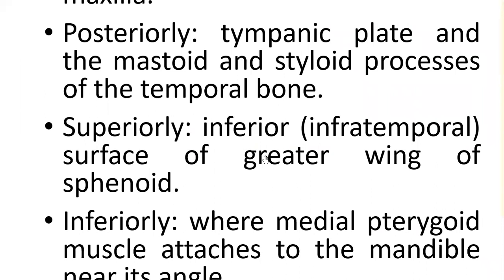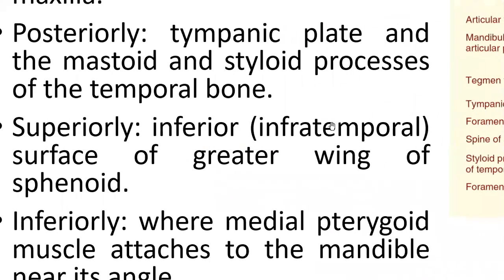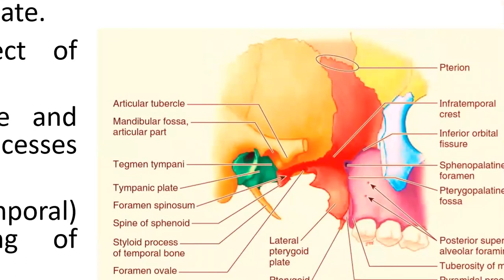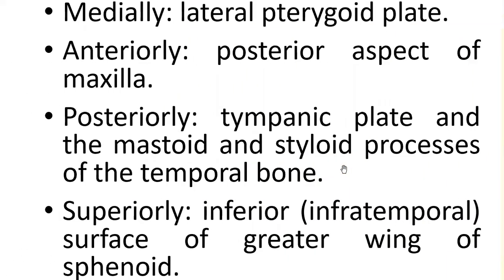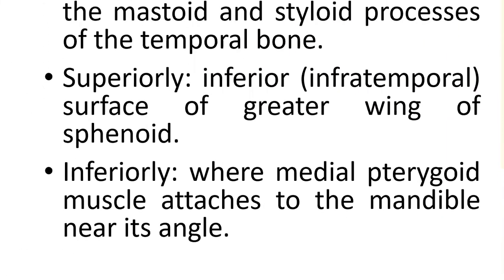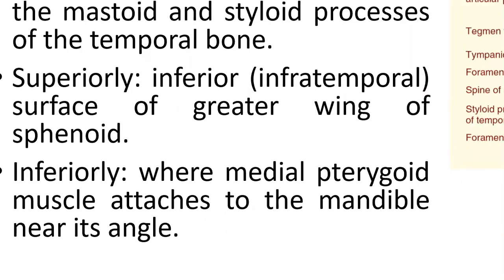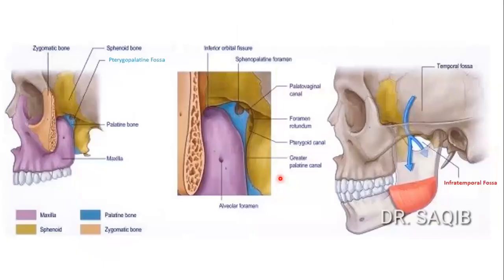Superiorly, or the roof, is the infratemporal surface of the greater wing of the sphenoid. Inferiorly, the medial pterygoid muscle attaches to the mandible near its angle. You can also see the communication of the temporal fossa with the infratemporal fossa.